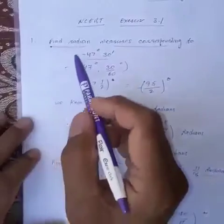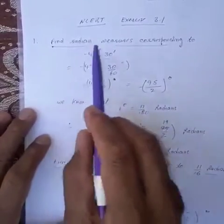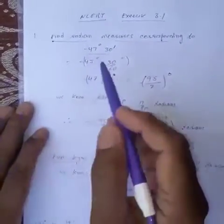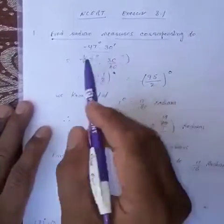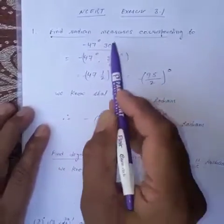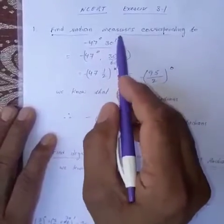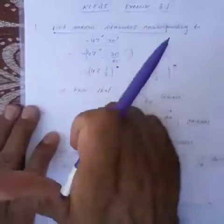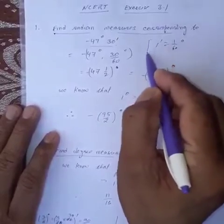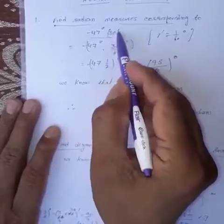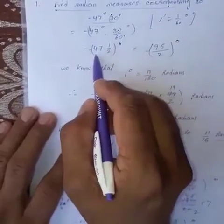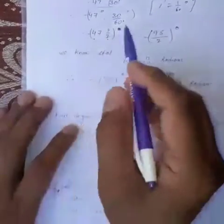This is the first question. We have to find radian measures corresponding to the angle minus 47 degrees and 30 minutes. We have done the conversion, so first the minutes should be converted into degrees. Using the relation 1 degree equals 60 minutes, or 1 minute equals 1/60 degrees, we multiply 30 by 1/60 and it will be 1/2. So the complete angle is now 47 and 1/2 degrees.